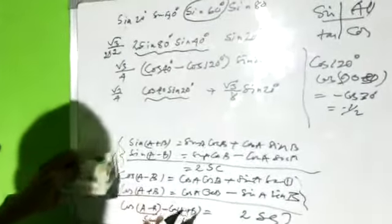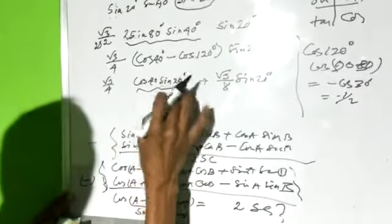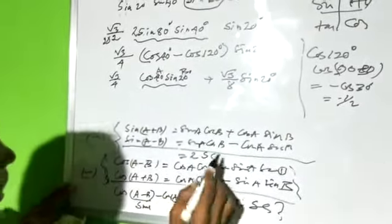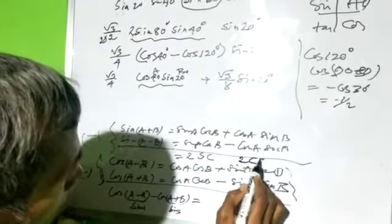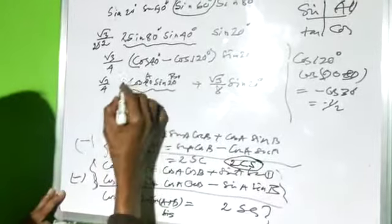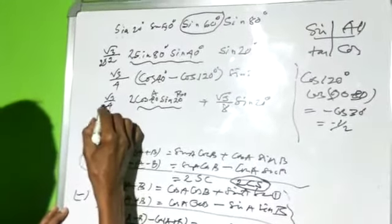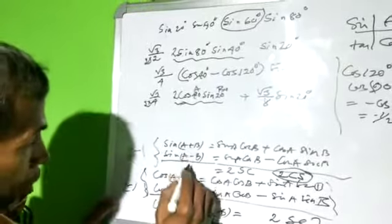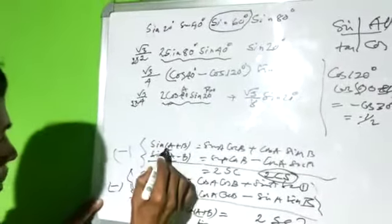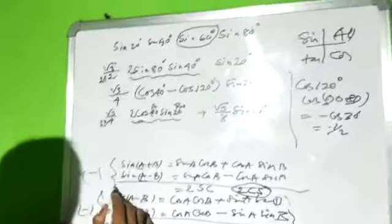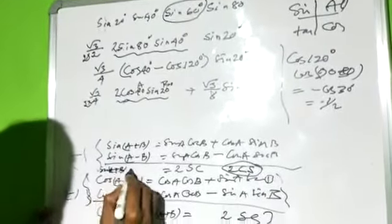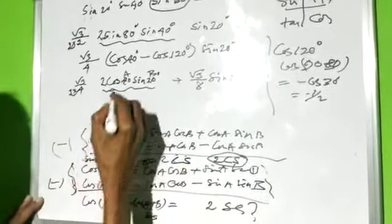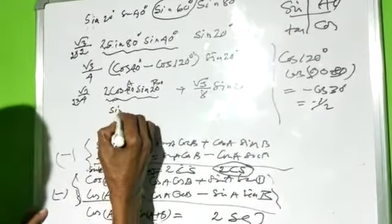If we subtract these two instead, the sinA·cosB terms cancel out, giving 2·cosA·sinB. Therefore with the subtraction arrangement — smaller angle b first, larger angle last — sin(A+B) − sin(A−B) = 2·cosA·sinB.